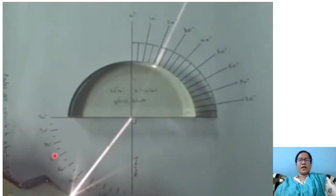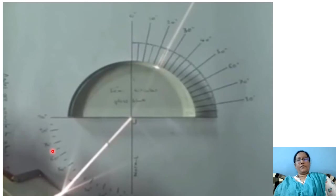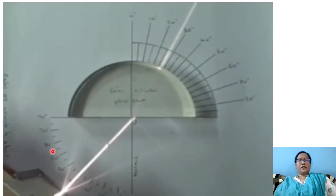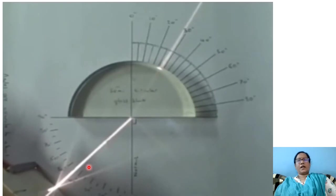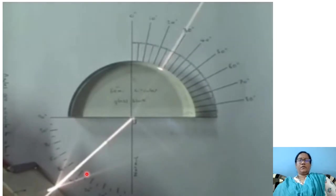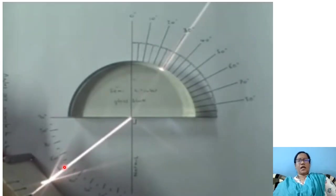See here children — at 10 degrees angle of incidence, the refracted angle is 7 degrees. At 20 degrees angle of incidence, the refracted angle is 13 degrees. You will also observe readings at 30, 40, and 50 degrees of incidence.